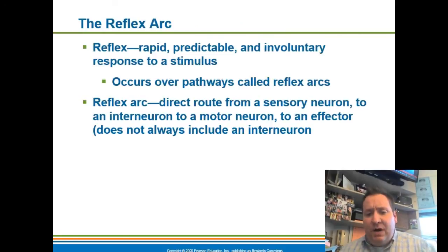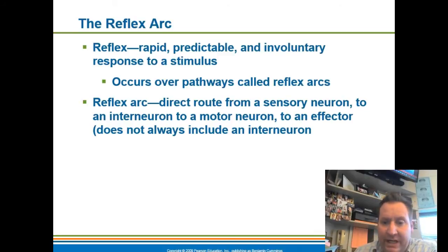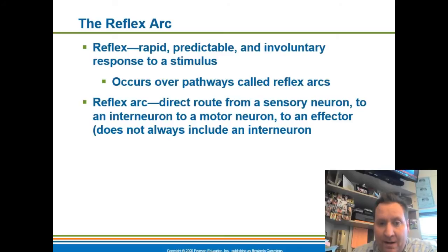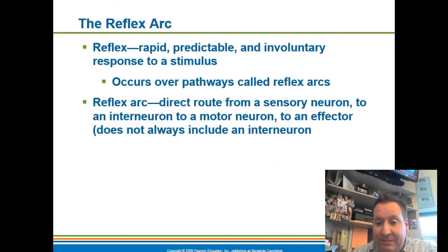We also did labs dealing with reflexes. A reflex is a rapid, predictable, involuntary response to a stimulus, occurring over pathways called reflex arcs. A reflex arc goes from a sensory neuron to an interneuron to a motor neuron to an effector — though it doesn't always include an interneuron. These reflexes are rapid, predictable, and involuntary — you don't have conscious thought over them. They're usually there for protective purposes.